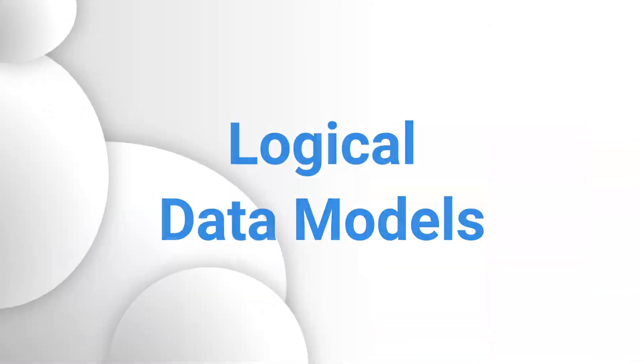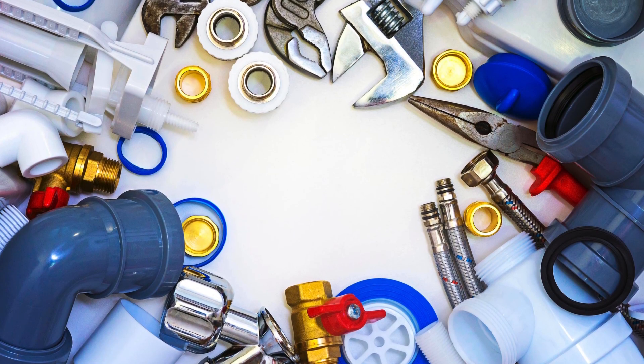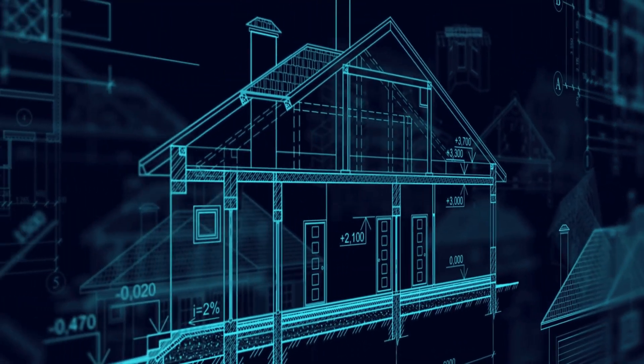Next, we dive a bit deeper into logical data models. This is where we decide what type of materials we'll use for our house and start talking about where the electrical and plumbing will go. The logical data model provides more detail than the conceptual model and is independent of the actual database systems — very important. It includes all entities and relationships from the conceptual model, but also adds key attributes and defines primary keys that establish how tables connect and interact.